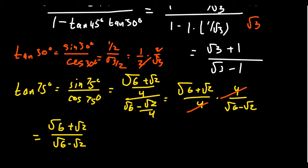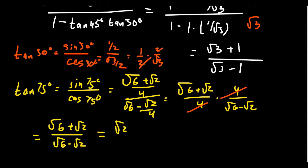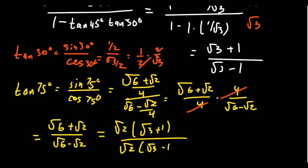You end up with root 6 plus root 2 over root 6 minus root 2. Comparing the two answers, they don't look the same at first. But on the top you can factor out a root 2, leaving root 3 plus 1; and on the bottom factor out a root 2, leaving root 3 minus 1. The root 2s cancel, and it becomes clear the two values are one and the same thing.